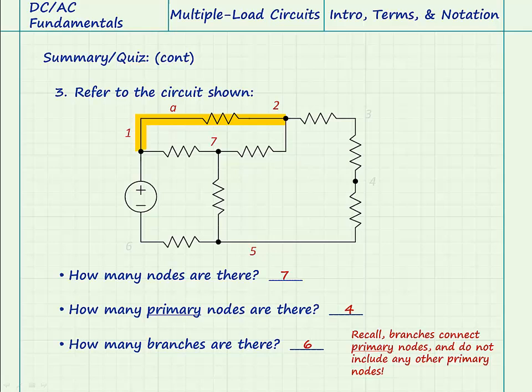Branch A connects primary nodes one and two and does not include any other primary nodes. Branch B connects primary nodes two and five. This branch includes nodes three and four, but neither of these are primary nodes, so this path between primary nodes two and five satisfies the definition of a branch.